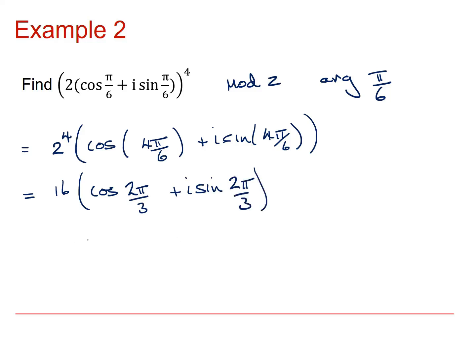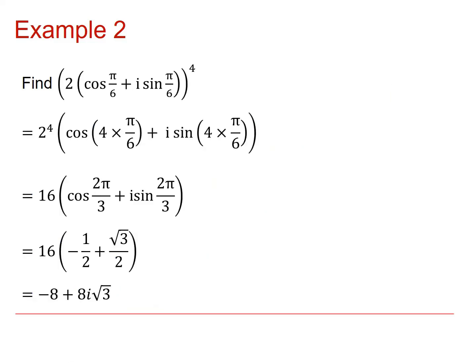Cos of 2 pi by 3 is minus 1 half, sine of 2 pi by 3 is root 3 over 2. So I get minus 8 plus 8i root 3. And again, there's that working tidied up for you.